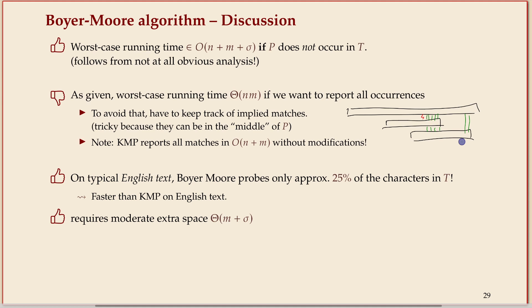You can implement Boyer-Moore to achieve the same worst case time as KMP, but it's much more tricky. Most of the time when people use this algorithm they accept the theoretical worst case but also accept that typically on English text, Boyer-Moore only has to look at about a quarter of the characters. So it's far from the worst case in practice and is usually much faster than KMP, because most of the time you can skip over entire parts of the text when the pattern doesn't even contain a character.